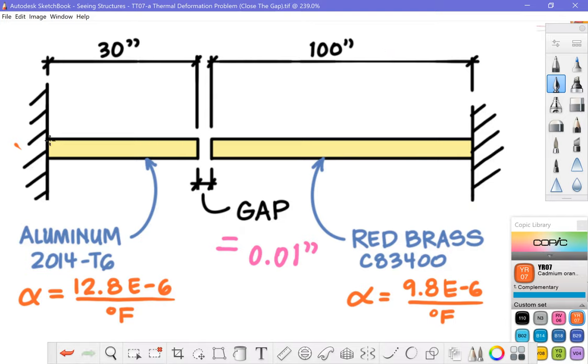I'll just sketch the deformed shape of these so aluminum will increase a certain amount and the piece of brass will also increase in length and we want to determine the temperature at which those two planes just come right together.